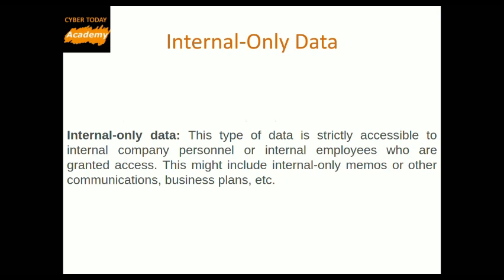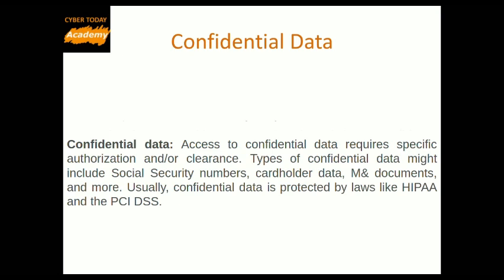Type 3 is confidential data. Access to confidential data requires specific authorization and or clearance. Types of confidential data might include social security numbers, cardholder data, medical documents, and more. Usually, confidential data is protected by laws like HIPAA and PCI-DSS.